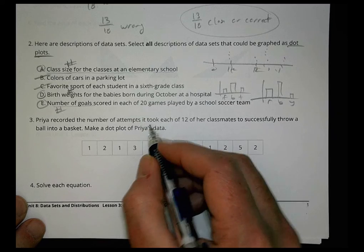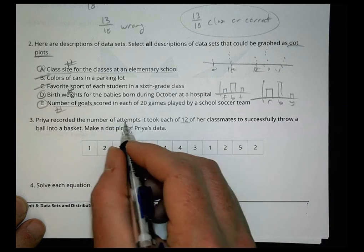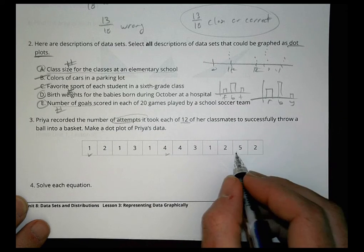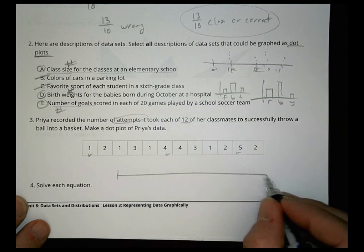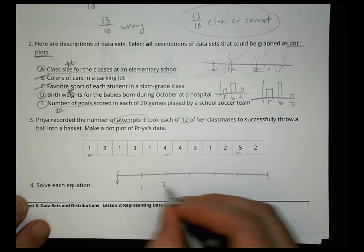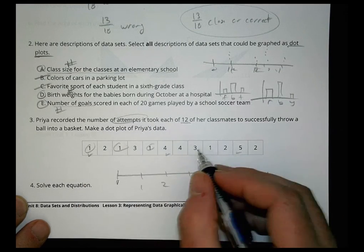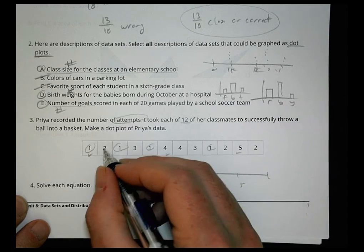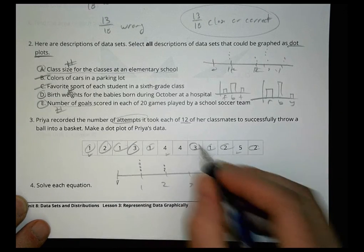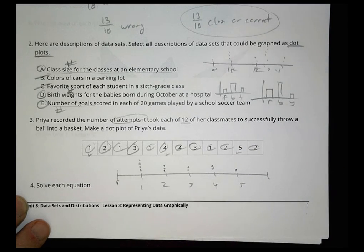Number three. Pryor recorded the number of attempts it took each of 12 of your classmates to successfully throw a ball in the basket. Make a dot plot. Well, we're going to go dots from one to five. So make a plot like this. One, two, three, four, five. And we see how many zeros there were - none. How many ones? Four. So one, two, three, four. Twos, we have three. So one, two, three. Threes, we have two - one, two. Fours, one, two. And one five. And that's it for that. That's your dot plot.